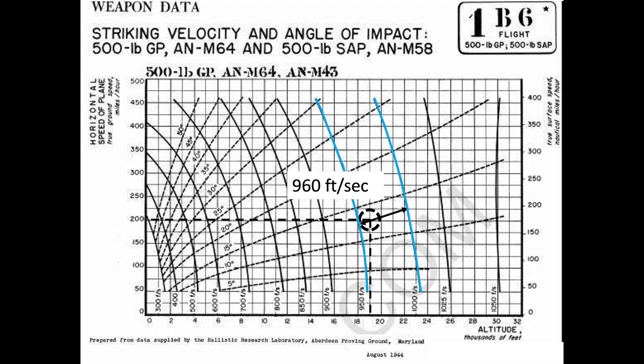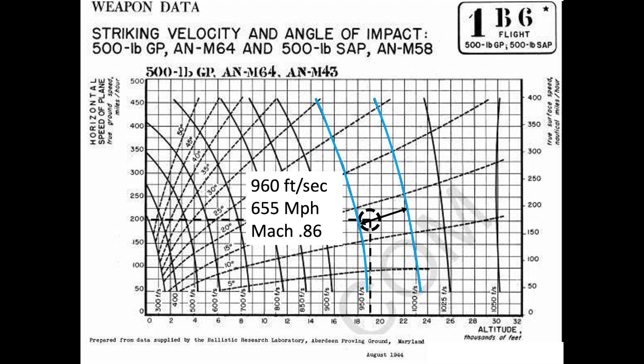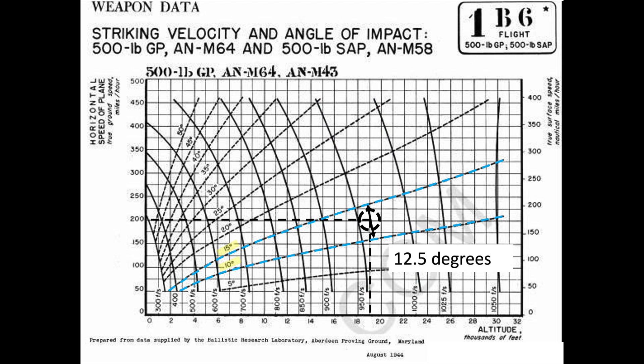960 feet per second equates to 655 miles per hour or Mach 0.86. Interpolating between the adjacent bomb strike angle dashed lines of 10 degrees and 15 degrees shows the bomb will strike at a 12.5 degree angle offset from the vertical.